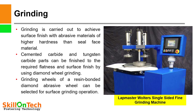You can see a picture of a Lapmaster Bolter's single-sided fine grinding machine. Grinding is carried out to achieve the required surface finish using abrasive materials of higher hardness than the seal face materials. Cemented carbide and tungsten carbide parts can be finished to the required flatness and surface finish using diamond wheel grinding. A resin-bonded diamond abrasive wheel can be selected for surface grinding. Here in this picture you can see how surface grinding of the seal faces is carried out.